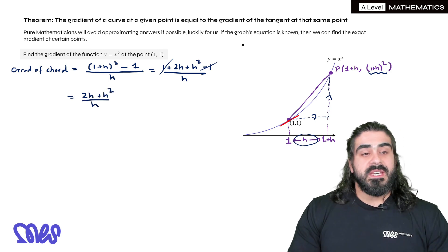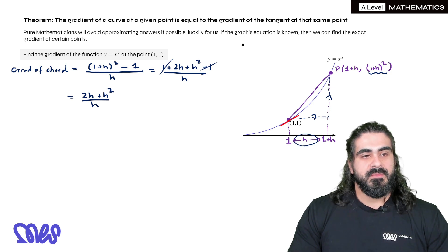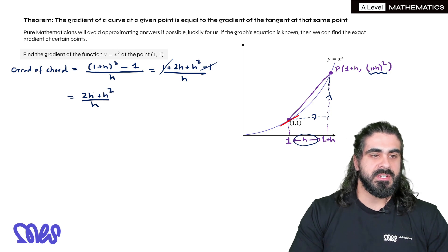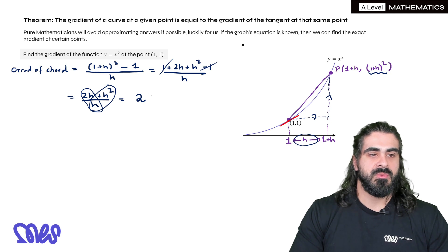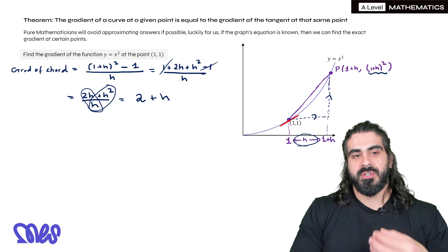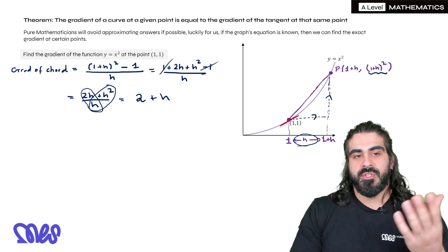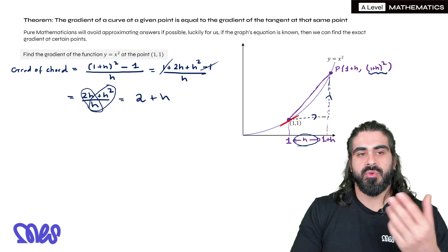We can do more simplification here. You might notice that on the top, we have h's on both terms, and we're divided by h. So we can split the fraction here. We have 2h/h, which is 2. And then we have h²/h, which is just h. So that's the gradient of the chord in general. So if h was 2, if I made this distance h equal to 2, then the gradient of that chord would have been 4.